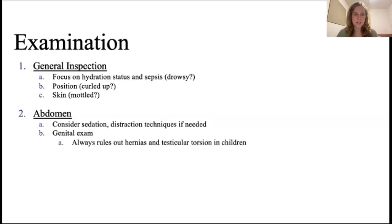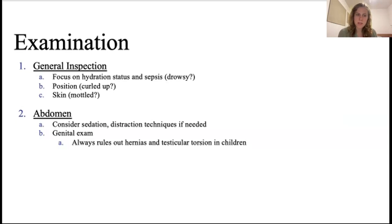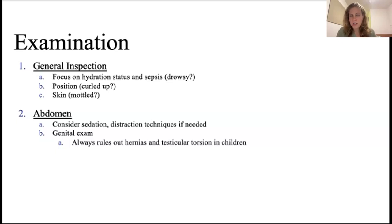On examination, focus on hydration status. Do they look drowsy? Are they behaving as usual? Is their skin dehydrated or mottled, which can be a sign that circulation isn't doing well, possibly indicating infection. The child's position can be important - are they pulling their legs up? You may need distraction techniques for abdominal examination, and you can ask the parent to hold the child. In children, it's always important to do a genital exam because hernias and testicular torsion can be significant emergencies.